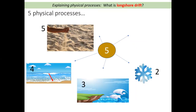Before we begin, we just want to recap the key physical processes that you need to know about. A reminder that physical processes are anything that changes the shape or the look of the beach. There are five that you need to know about, and these also apply to rivers as well. The first one is mass movement — the movement of sediment, so that could be rock or sand, downhill due to gravity. It could be a cliff collapsing into the sea.